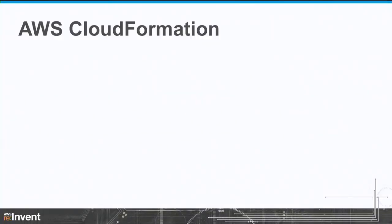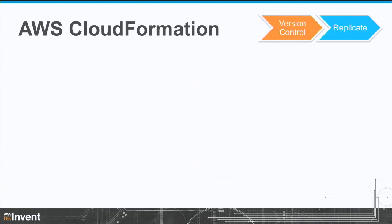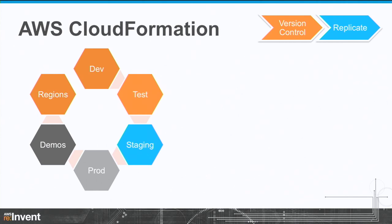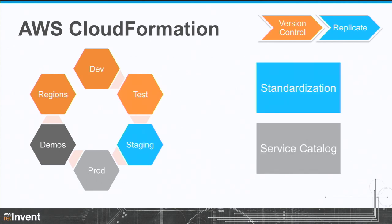When you're building an application stack, you want to be able to replicate it again and again — through dev, test, and production environments, but also for stripped-down demo versions or creating a version of the stack for a new region your business is entering. If you package your application in a CloudFormation template, this replication is really easy — just a few clicks and a few minutes to recreate that stack exactly like it was before. Replication is also useful when your company has a policy for a standard VPC configuration that everybody should use; you can give them a CloudFormation template for that.